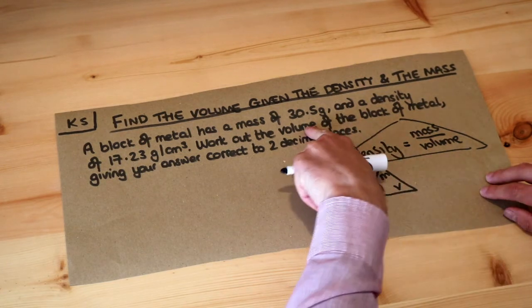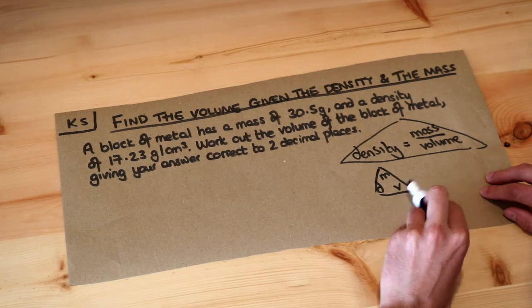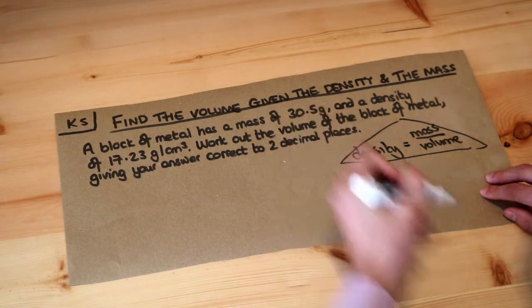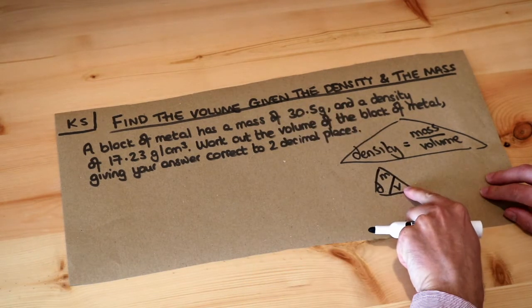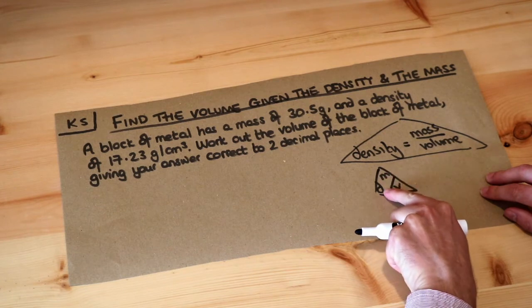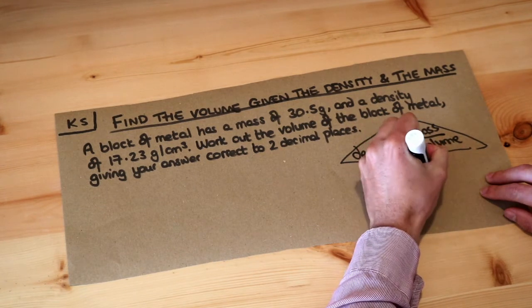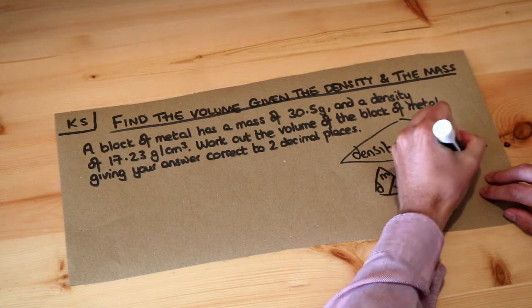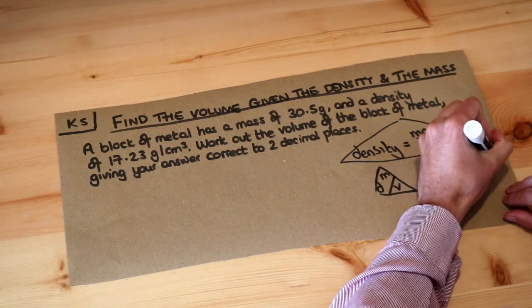Now we want to find the volume of the block of metal. If we put a line here, we can see that volume is mass over density. So volume is mass over density.